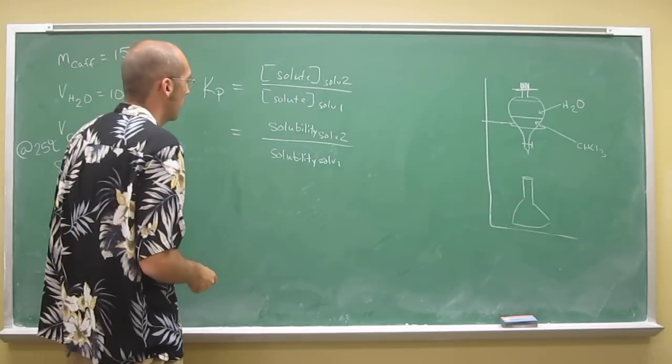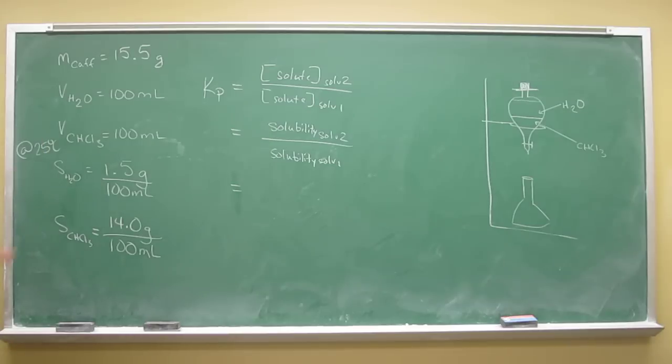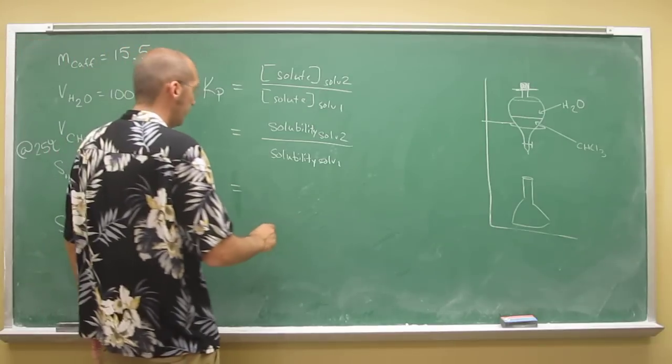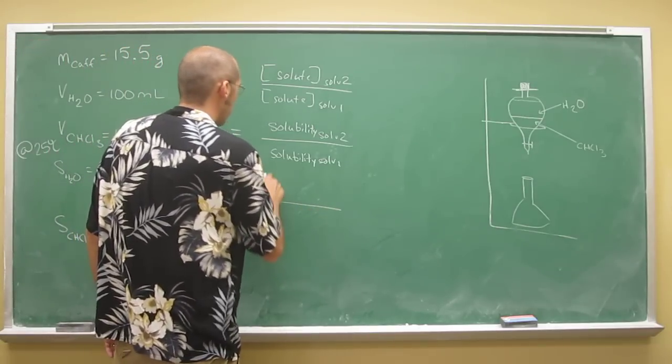In this case, the solute is caffeine. All we really have to do is take these two solubilities and divide one over the other. Solvent two, in this case, we'll use as chloroform.